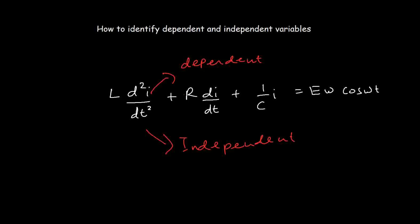So we have i to be the dependent variable and t to be the independent variable, where l, r, c, e, and w are constants. The easiest way to identify the dependent variable is that it is part of the numerator, and the independent variable is part of the denominator.